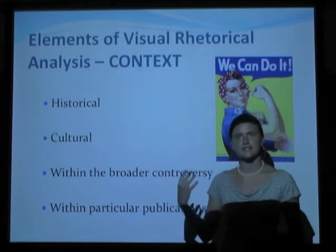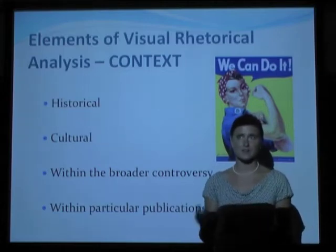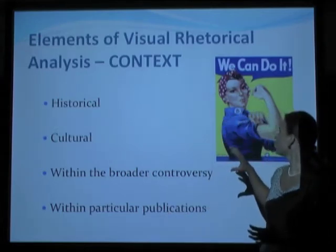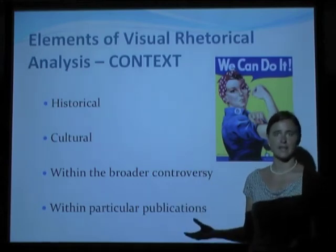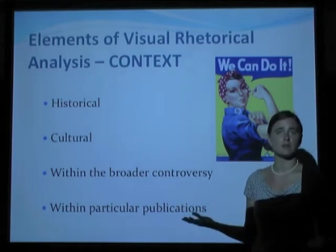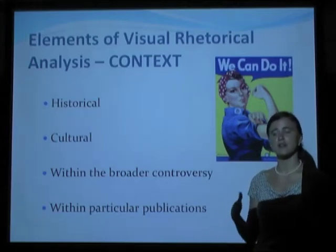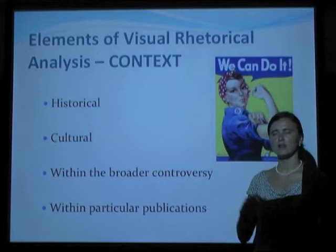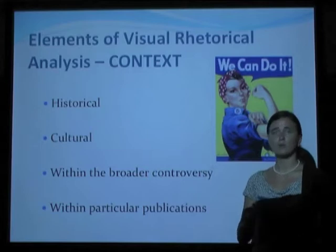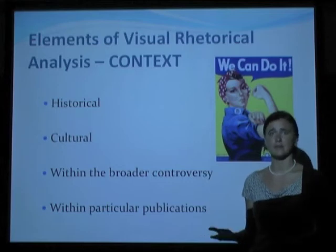Within particular publications — Rosie the Riveter was on stamps, on magazine covers, and all sorts of different cultural publications. The audience she reached was different based on every publication venue. Since audiences vary so differently, it would depend on how or where you saw Rosie that would determine what argument she was making for you. If you saw her on a stamp, she might be making a larger argument about women's employment in the workforce, versus if you saw her in a local women's club on a poster, she might be making a more feminist argument about getting women out of the house and not so much about supporting the war.